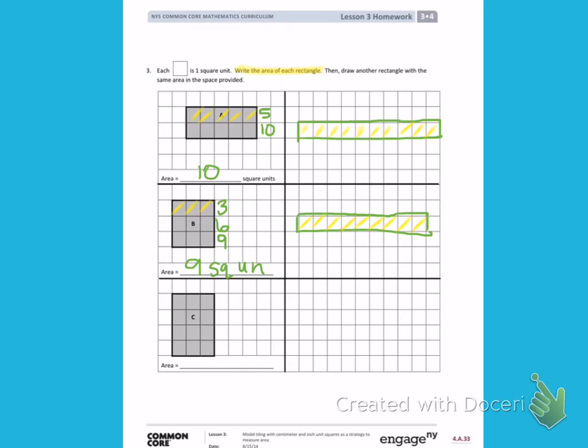First, make sure you label with square units. Then draw a rectangle next to it that has the same area, but is a different shape.